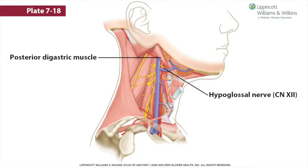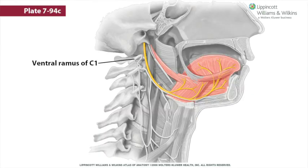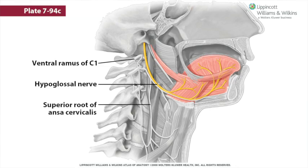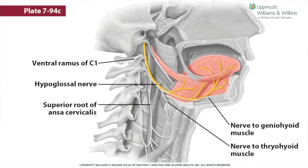The hypoglossal nerve makes a brief appearance in the carotid triangle, sagging inferior to the posterior digastric muscle as it leaves the posterior triangle and then rises anteriorly to re-enter the submandibular triangle, passing between the hyoglossus and mylohyoid muscles on its way to the tongue. While in the carotid triangle, two branches of the ventral ramus of C1 that run with the hypoglossal nerve drop off: the superior root of the ansa cervicalis and the nerve to the thyrohyoid muscle. There is also a third C1 branch that leaves the hypoglossal nerve in the floor of the mouth — the nerve to the geniohyoid. These are branches of C1, not branches of the hypoglossal nerve itself.